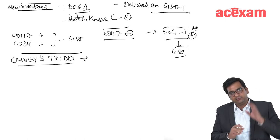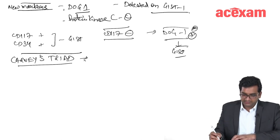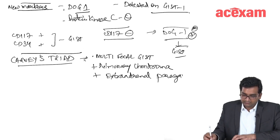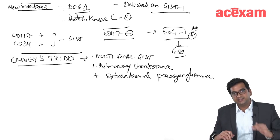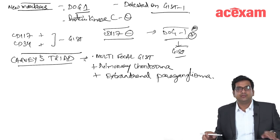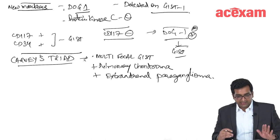What is Carney triad? In Carney triad, there is multifocal GIST present at multiple places, with pulmonary chondroma and with presence of extraadrenal paraganglioma.